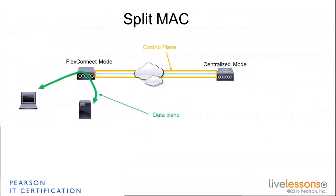The exception is the FlexConnect mode, where you decide that for some of the SSIDs, the data plane has to be local. So the data plane is going to stop at the access point level, on the switch somewhere at the branch level. But there will still be, in most cases, some control plane going to the controller. The idea is that the AP could survive the loss of that control plane temporarily. You may have some access points in FlexConnect mode where some SSIDs will be locally switched, while some other traffic from other SSIDs will still be sent to the controller. FlexConnect mode gives you that choice.